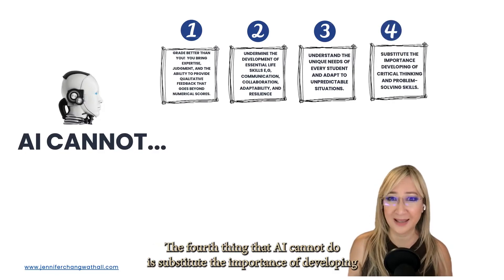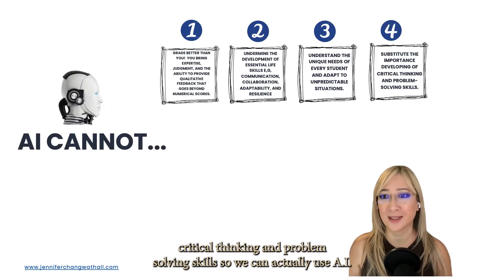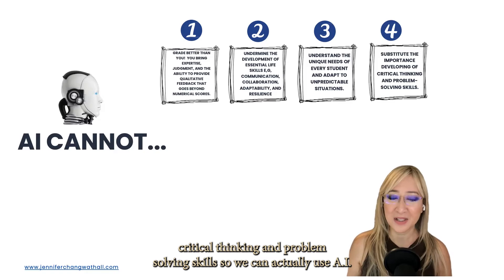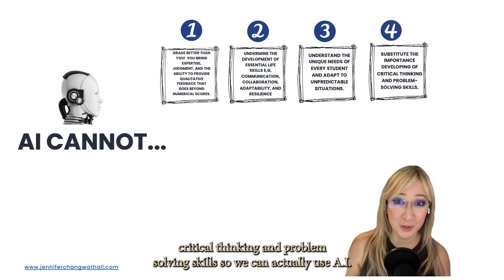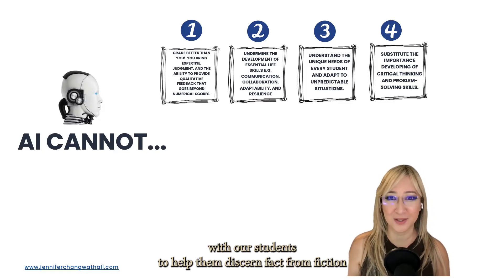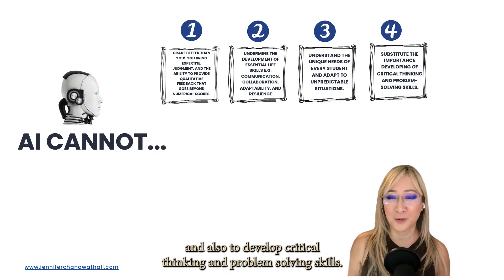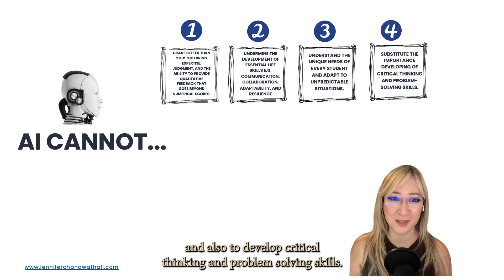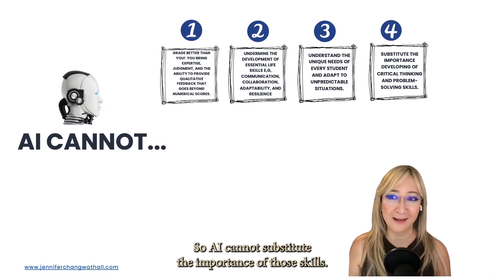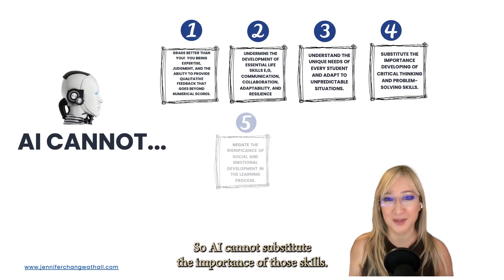The fourth thing that AI cannot do is substitute the importance of developing critical thinking and problem-solving skills. We can actually use AI with our students to help them discern fact from fiction and also to develop critical thinking and problem-solving skills, but AI cannot substitute the importance of those skills.